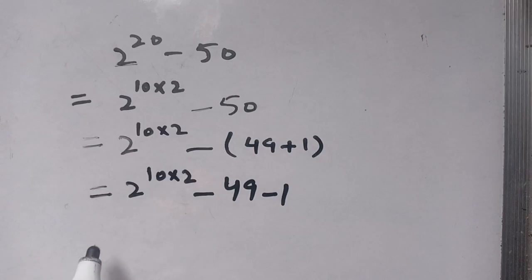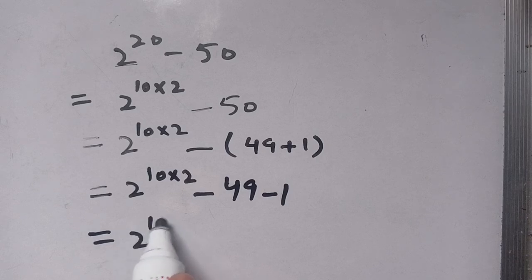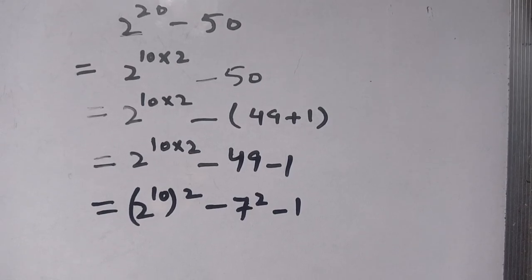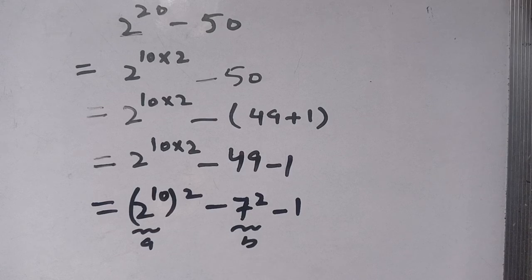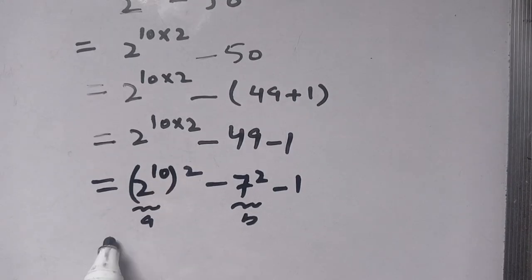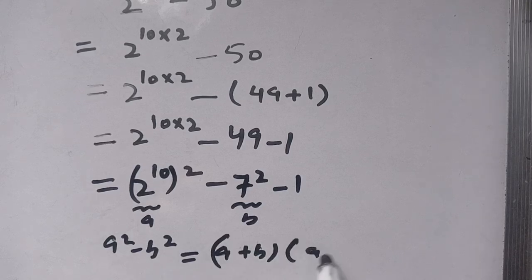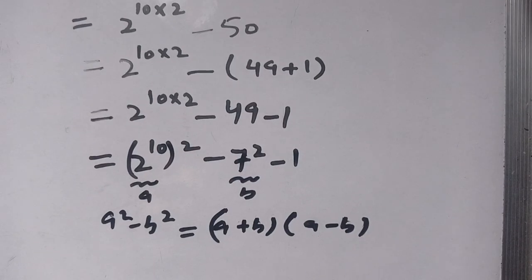We can write 2 power 10 times 2 as (2^10) bracket squared, minus 49, where 49 can be written as 7 squared, and minus 1. Now let us consider 2 power 10 as 'a' and 7 as 'b'. We know that a squared minus b squared equals (a plus b) times (a minus b), and we use this identity here.